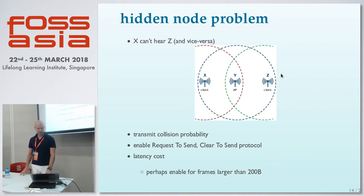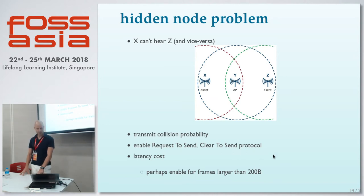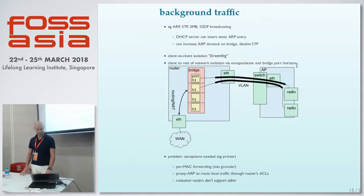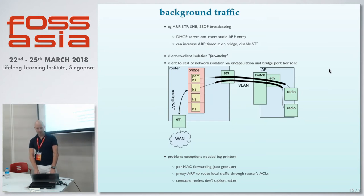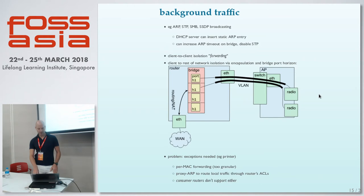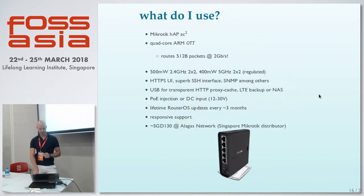There's actually a protocol for this: the RTS/CTS protocol mentioned earlier. You can enable it and even tune it — enable it for reduced frame sizes for small packets. You can also filter out background traffic by isolating each of the radios — the 2GHz and 5GHz radio — on separate bridge ports. This will all be available online to look at later.